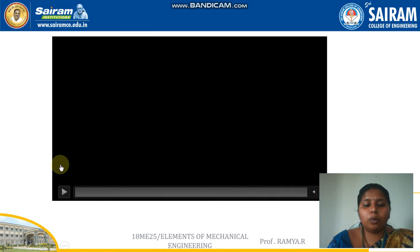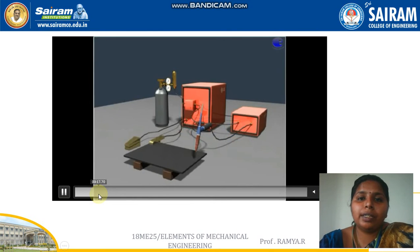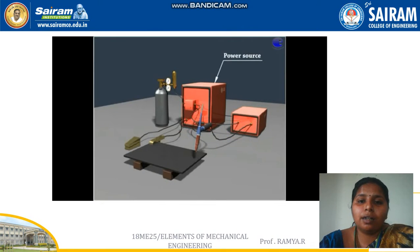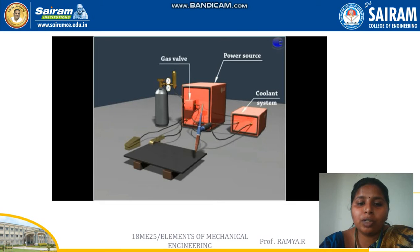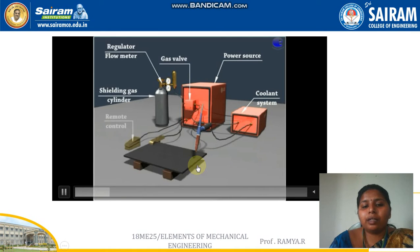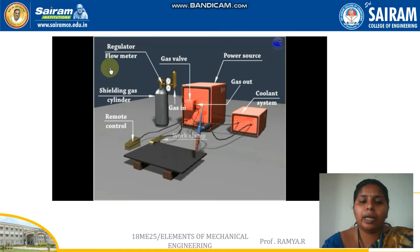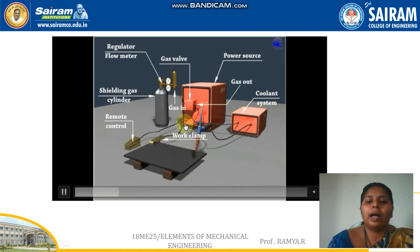This video shows both TIG welding and MIG welding. The major difference between TIG welding and MIG welding is the usage of the electrode. In TIG welding, a non-consumable electrode is used, so there is an additional filler material, whereas in MIG welding there is a consumable electrode, so there is no need for additional filler material.